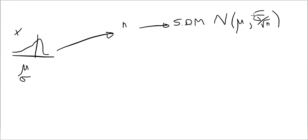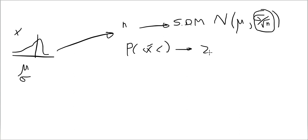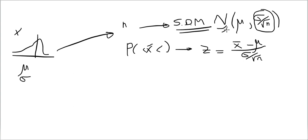Based on that, we said that if n increases, the standard error — this is called the standard error — is going to decrease and the distribution is going to be narrower. So if I want to know the probability of X̄ falling between two values, I can answer that using Z, which equals X̄ minus mu over sigma divided by square root of n. This works because the sampling distribution of the mean is normal, as long as you started with a normal distribution.